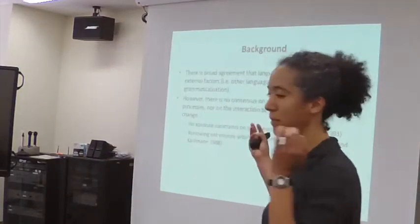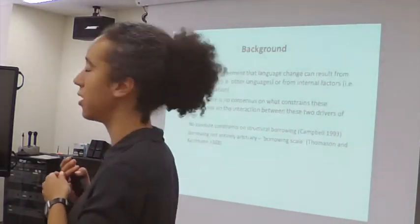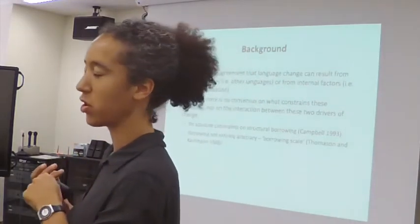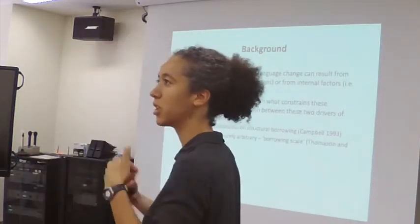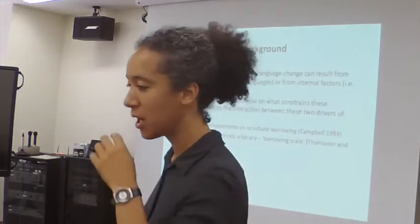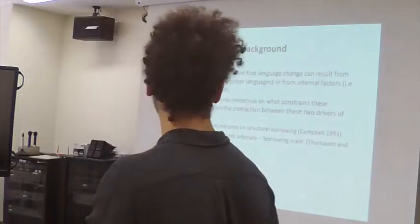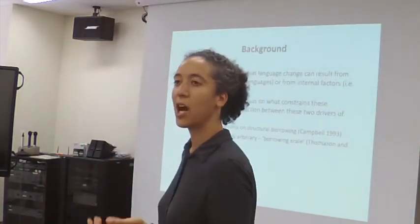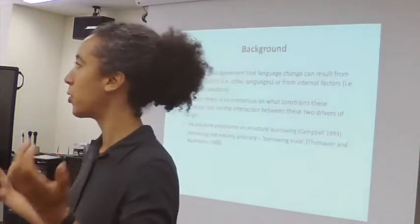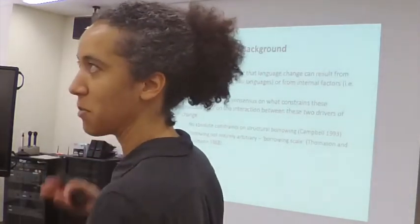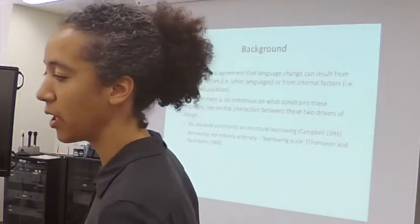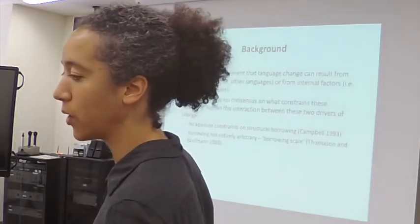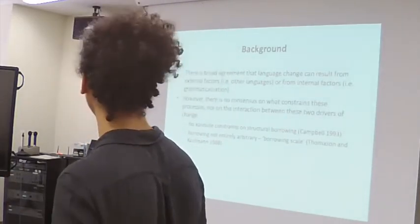There are lots more perspectives than this, but at one end of the spectrum is the idea that there are no absolute constraints on structural borrowing — anything goes, you can borrow anything, anything can change. But then the work of Thomson, Kaufman, and others suggests that borrowing is not entirely arbitrary, so they propose things like a borrowing scale — you might borrow lexical items before you change word order and things like that.